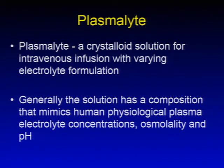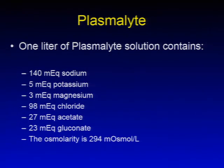Plasmalyte is another type of crystalloid solution used for intravenous infusion with varying electrolyte formulations. Generally, this solution has a composition that mimics human physiologic plasma electrolyte concentrations, osmolality, and pH. One liter of Plasmalyte contains 140 milliequivalents of sodium, 5 milliequivalents of potassium, 3 milliequivalents of magnesium, 98 milliequivalents of chloride, 27 milliequivalents of acetate, and 23 milliequivalents of gluconate, with an osmolarity of 294 milliosmoles per liter.